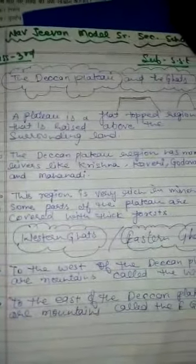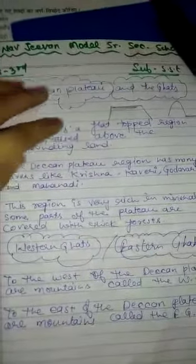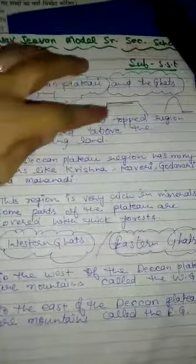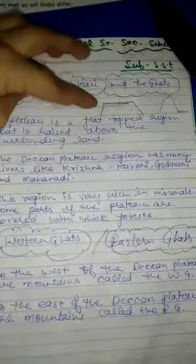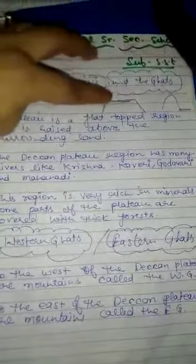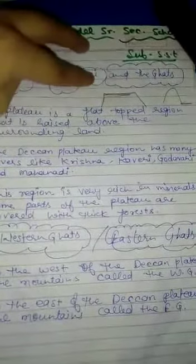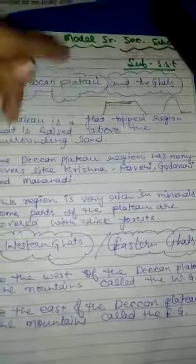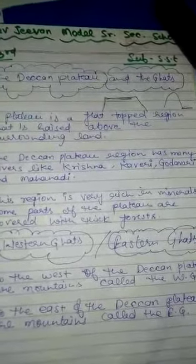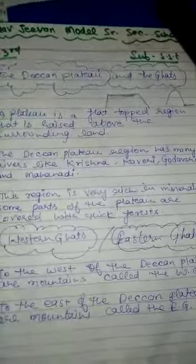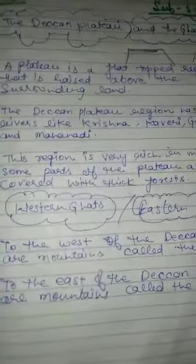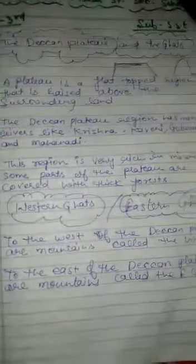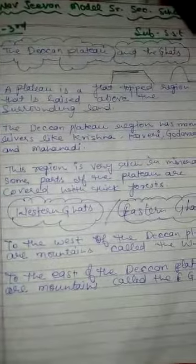Basically, a plateau is an area like this — it is flat at the top. A plateau is also called a tableland. Now, Western Ghats and Eastern Ghats.